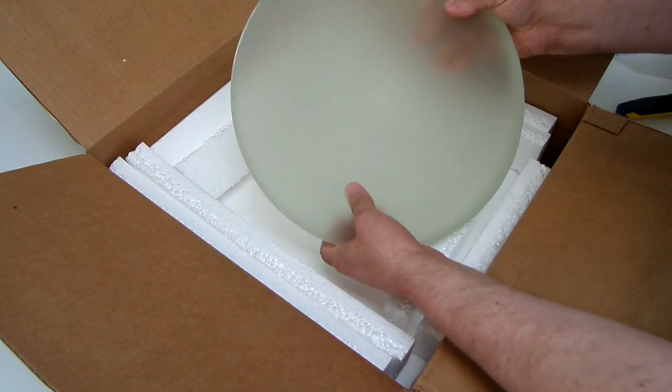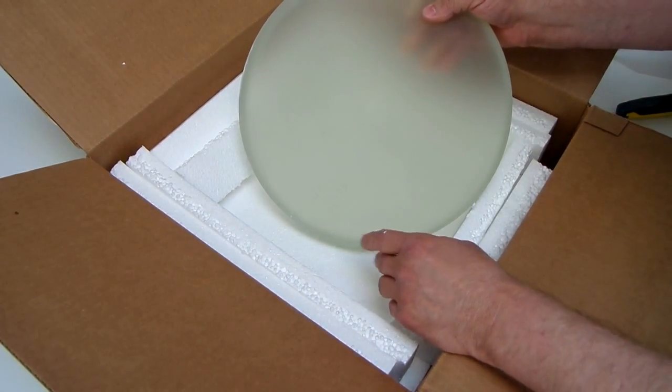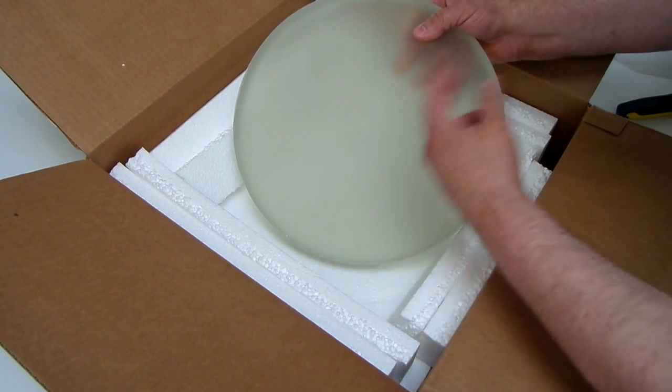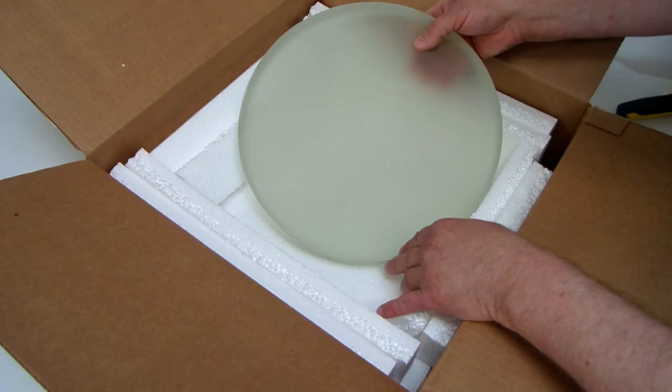So this is how we get a blank and the first step after getting it out of the box is to take it down into the lab and I'll more accurately measure the diameter and measure this curve. So we'll show you next how we do that.